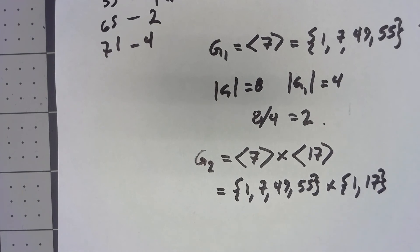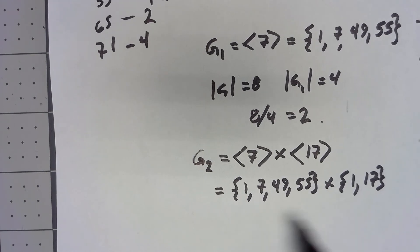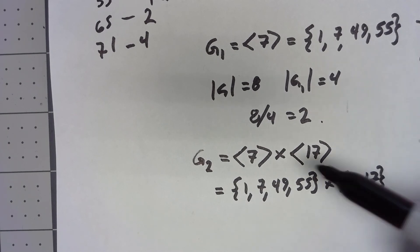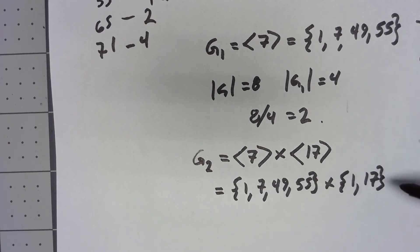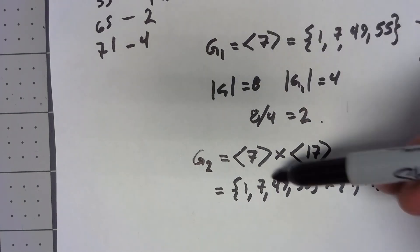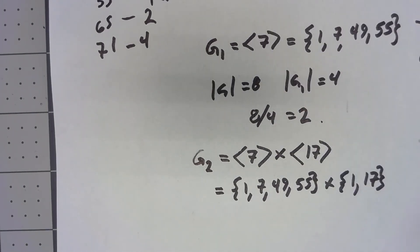And that should give me my entire group. There's 8 elements in this, so that has to be my entire 8 element group. Now it would be worth stopping by and actually going through and computing what are all the things we get. Make sure that when I do 7 times 17, I'm getting something that's not in one of these two groups. But if you check it, it will work out.